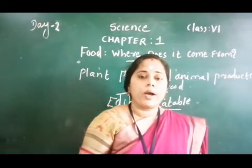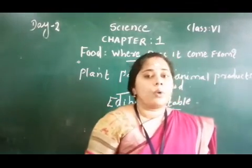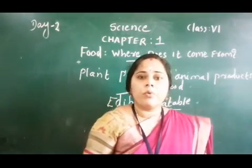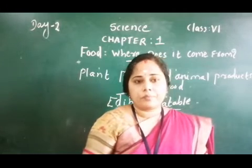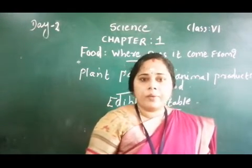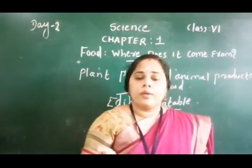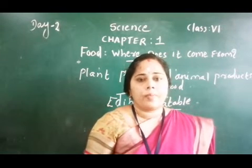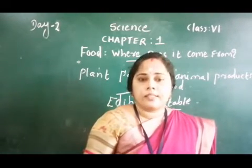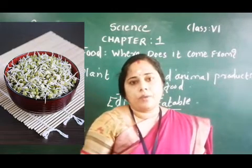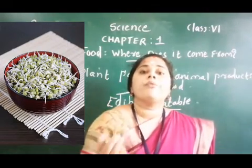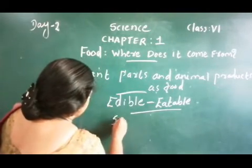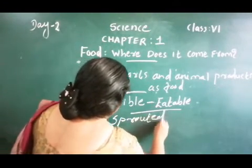There is another activity — Activity 5. For that you have to take some seeds of moong or chana and put them in a container filled with water. On the next day, drain out the water and cover the seeds with a wet cloth. In the following day, what can we see? A small white structure may have grown out of the seeds. That white structure we call sprouted seeds.